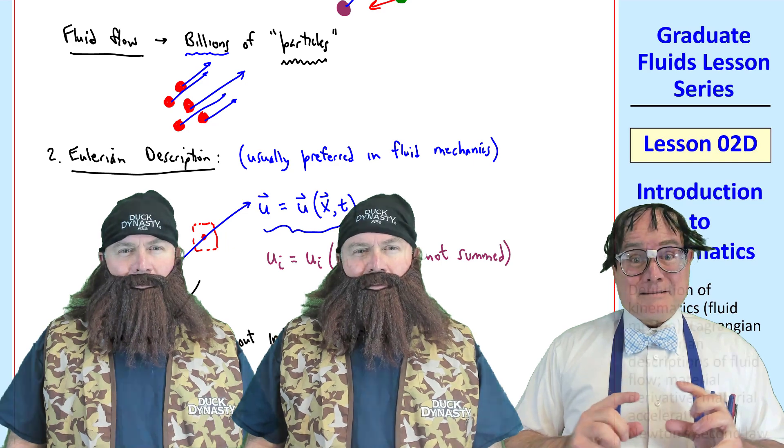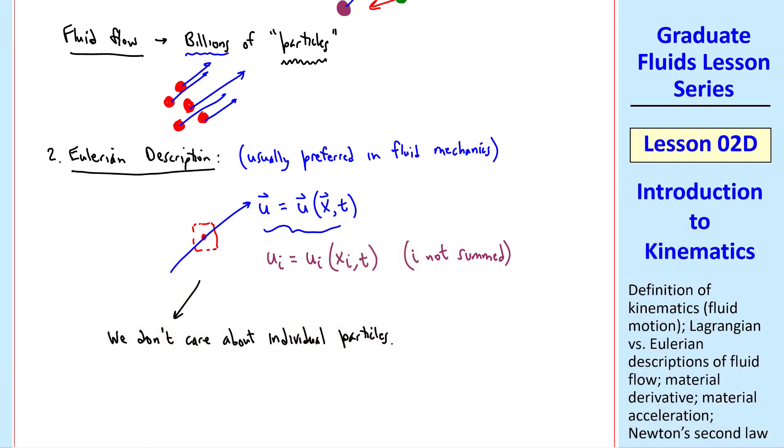In the Eulerian description, we don't care about individual particles, just the flow field, where this is the flow field variable for velocity. And this is our field, or you can think of it as a control volume.